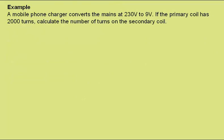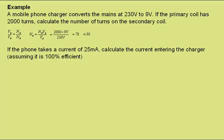Here's an example. A mobile phone charger converts the mains at 230 volts to 9 volts. If the primary coil has 2,000 turns, calculate the number of turns on the secondary coil. Using the transformer rule and rearranging for the number of turns in the secondary gives an answer of 78, or around 80 turns. If the phone takes a current of 25 milliamps, calculate the current entering the charger assuming it is 100% efficient. Using the power equation and solving for the primary current gives 9.8 × 10⁻⁴ amps, which is around 1 milliamp.